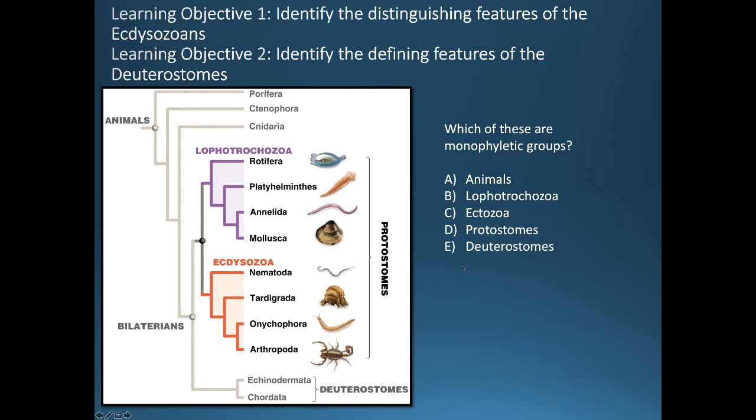The ecdysozoans will include all of these groups, and we'll spend some time talking about nematodes and arthropods. The other two phyla we won't talk about today. The last objective will focus on the deuterostomes. The question here is: which of these are monophyletic groups — animals, lophotrochozoans, ecdysozoans, protostomes, and deuterostomes?